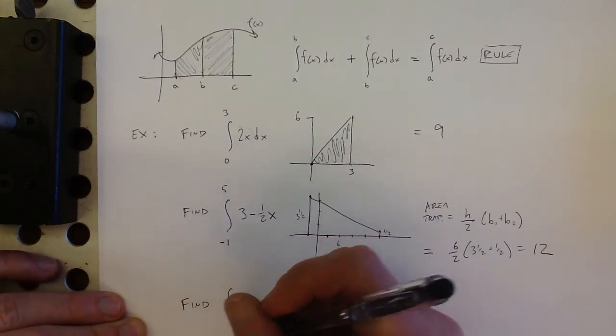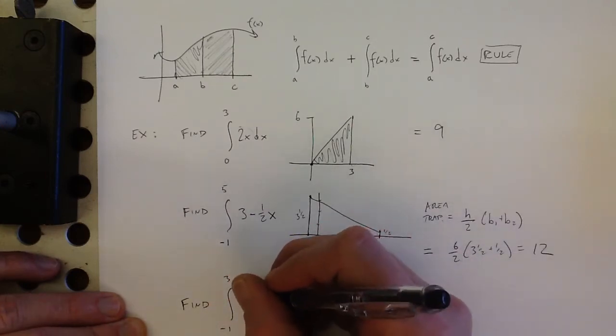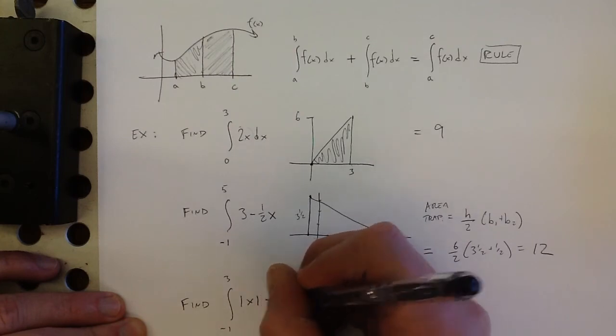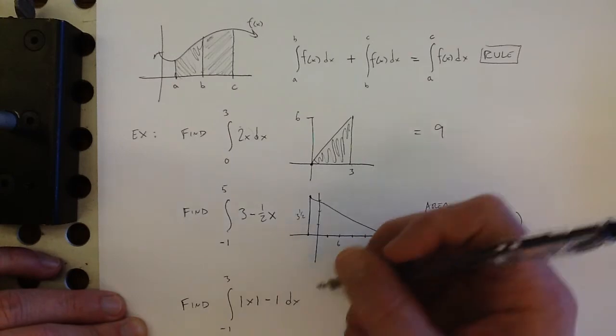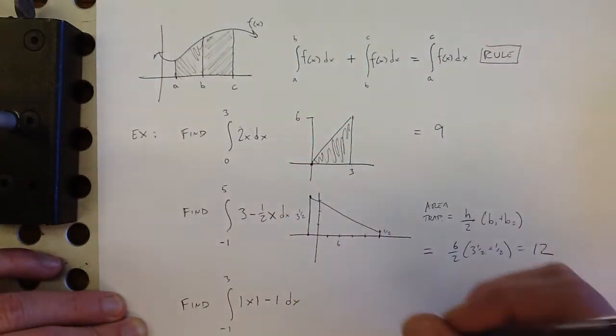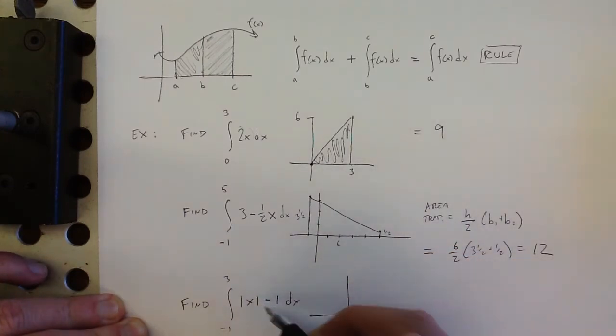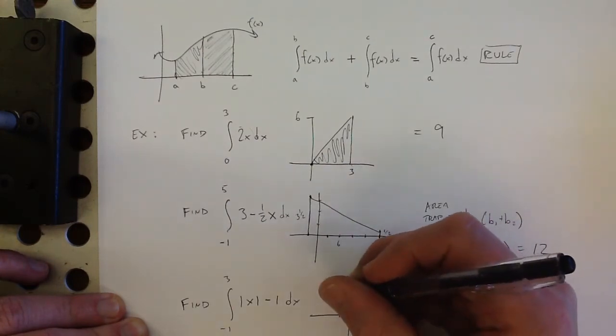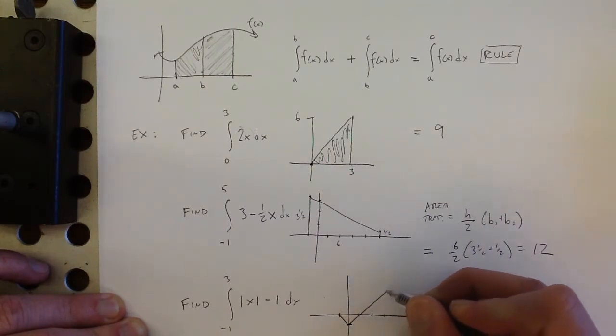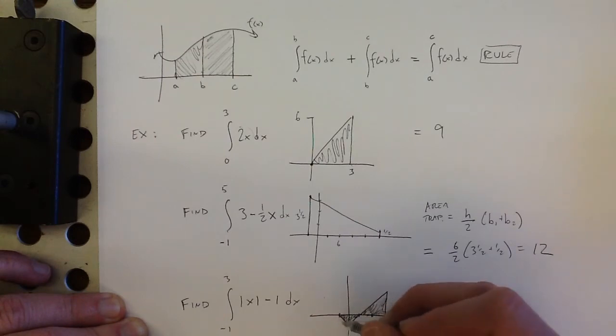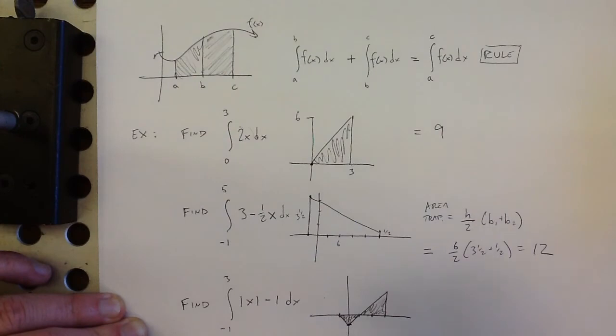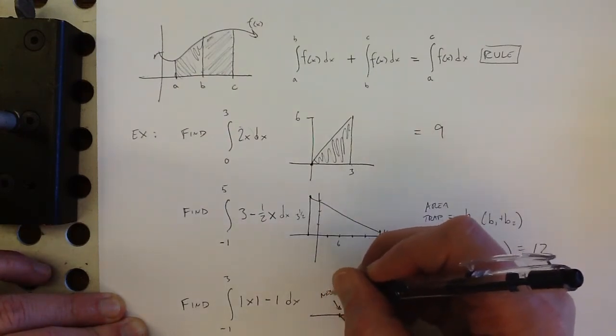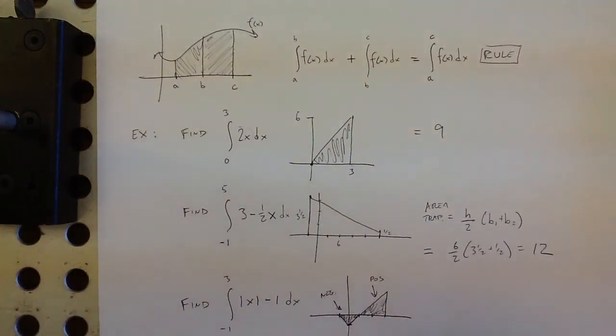Here's another one. Find the area from negative 1 to 3 under the absolute value of x minus 1. So let's see, what does this look like? This is the absolute value function dropped by 1. So it looks like I have some negative area and some positive area. So I need to be careful that I get all those right.